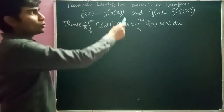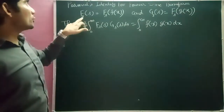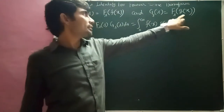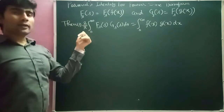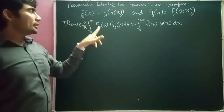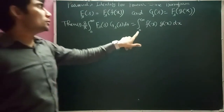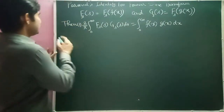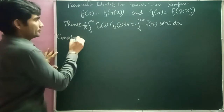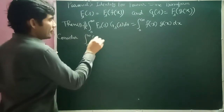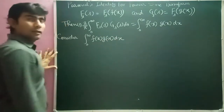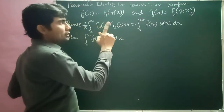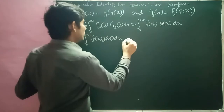Now we have Parseval's identity for Fourier sine transform: if Fourier sine transform of f(x) equals Fs(s), and Fourier sine transform of g(x) equals Gs(s), then (2/π) integral from zero to infinity of Fs(s) · Gs(s) ds = integral from zero to infinity of f(x) · g(x) dx. इसको prove करना है। Right side लेके चलते हैं: integral from 0 to infinity of f(x) · g(x) dx। G(x) है वो Gs(s) का inverse Fourier sine transform है।